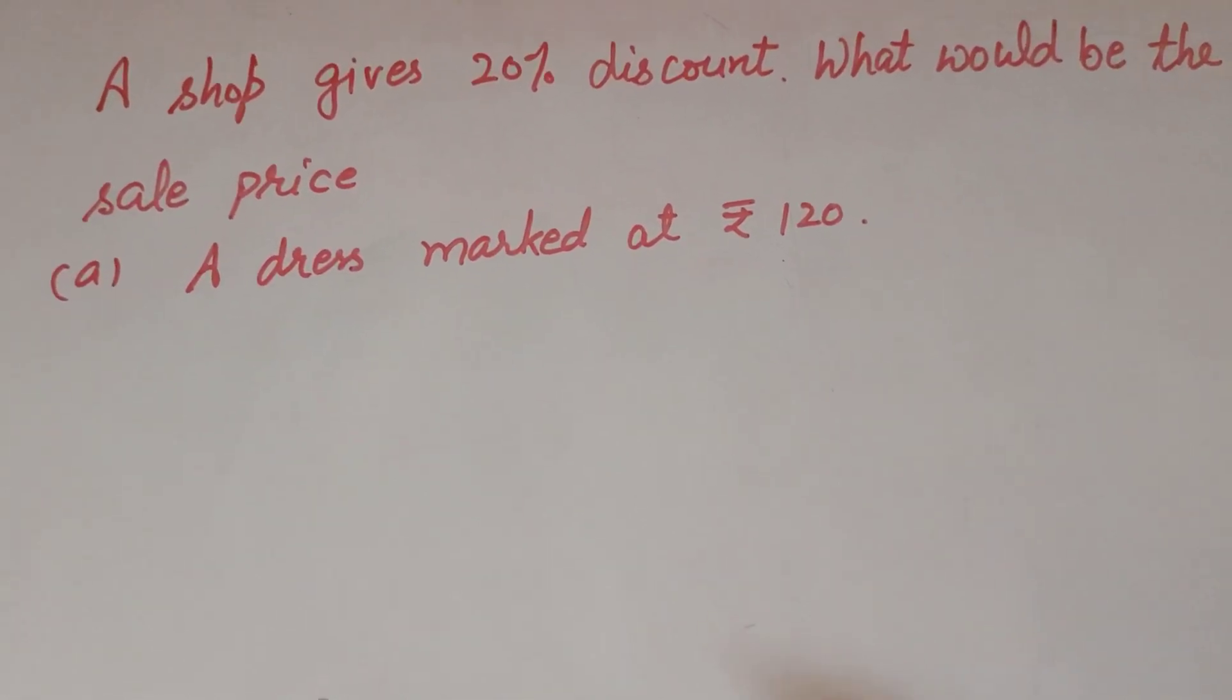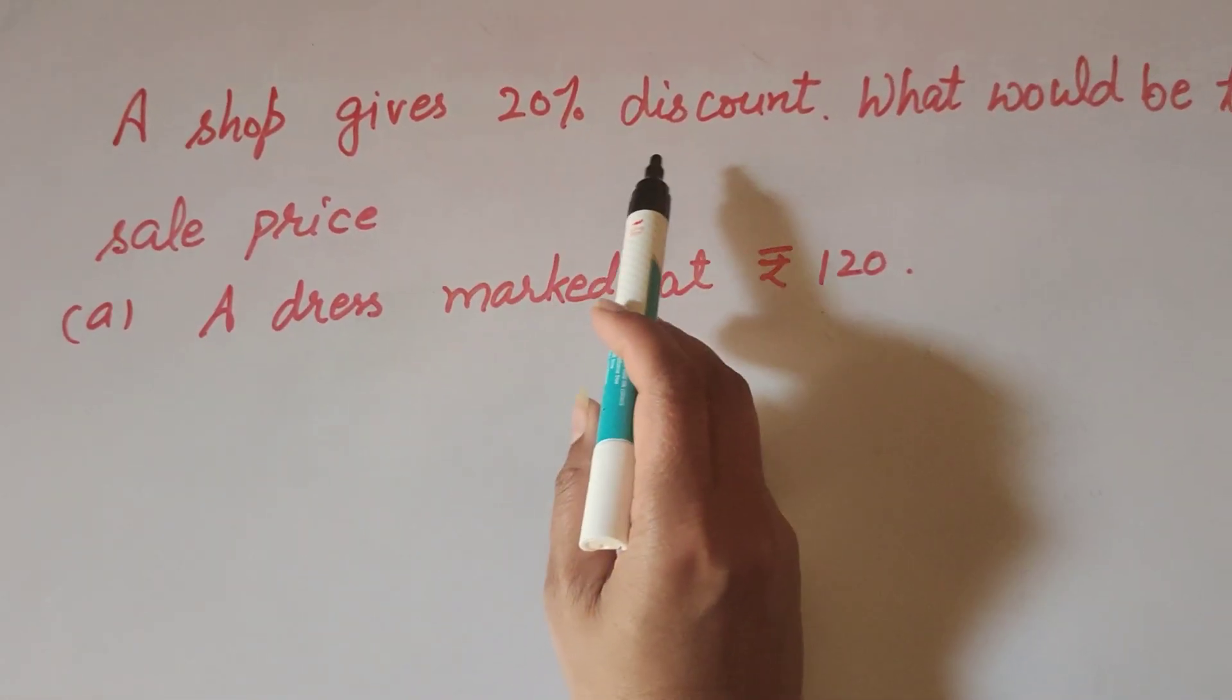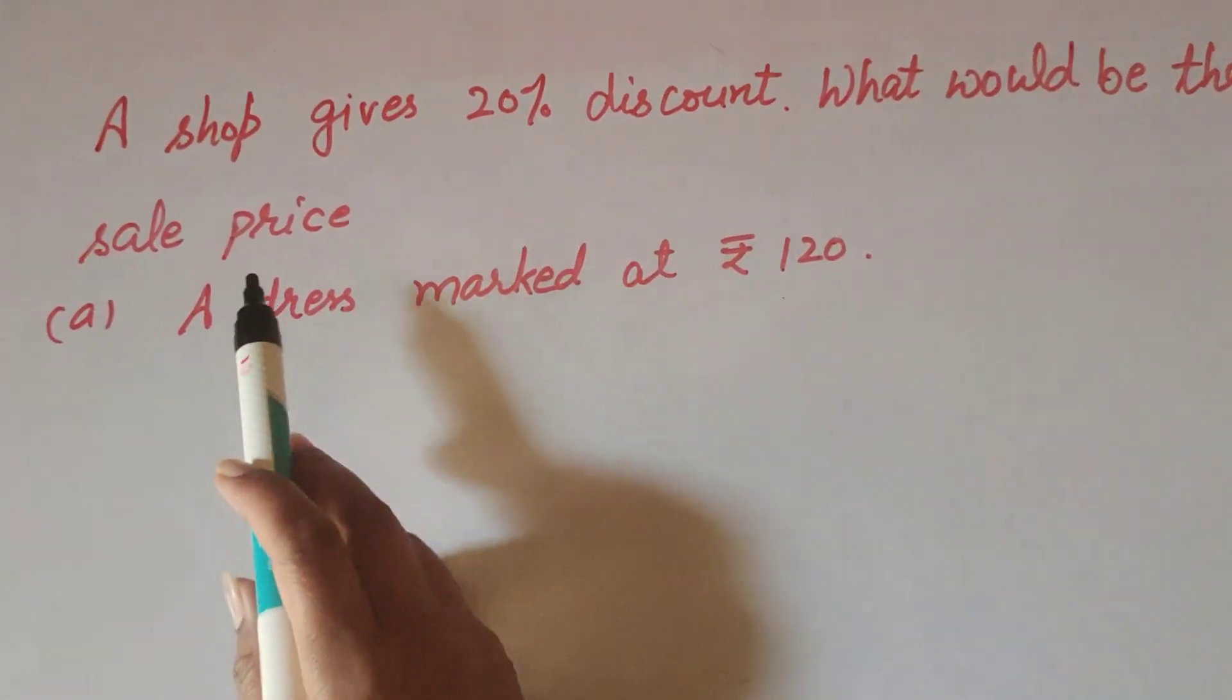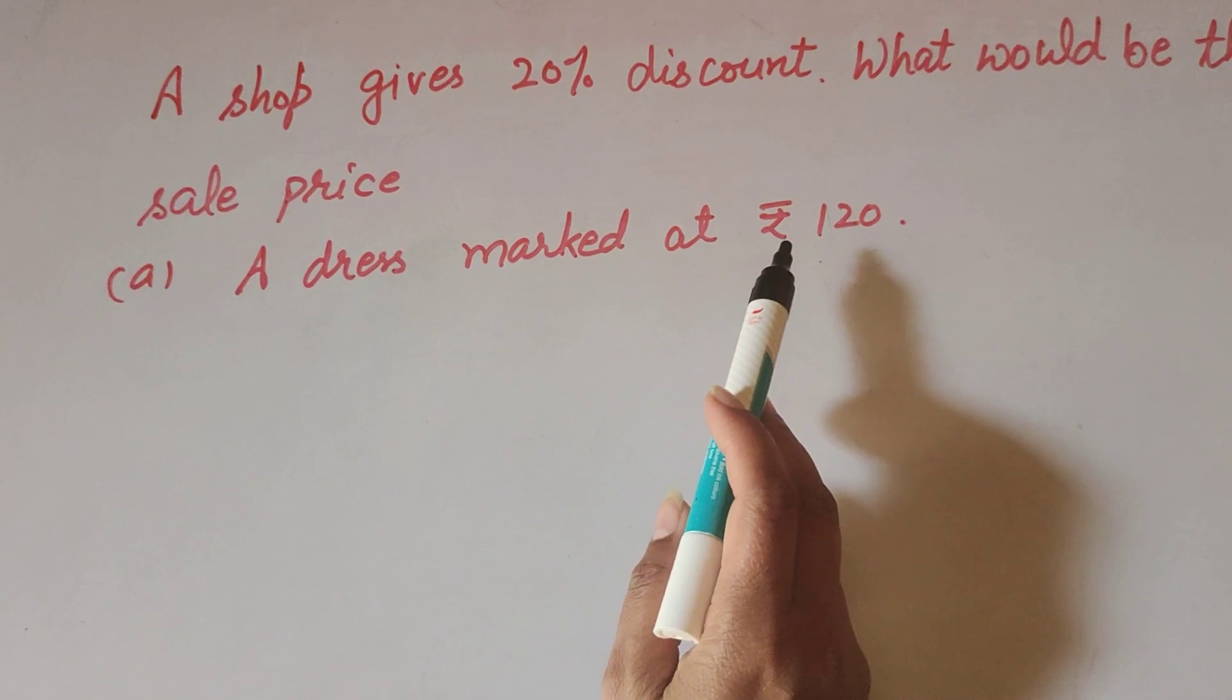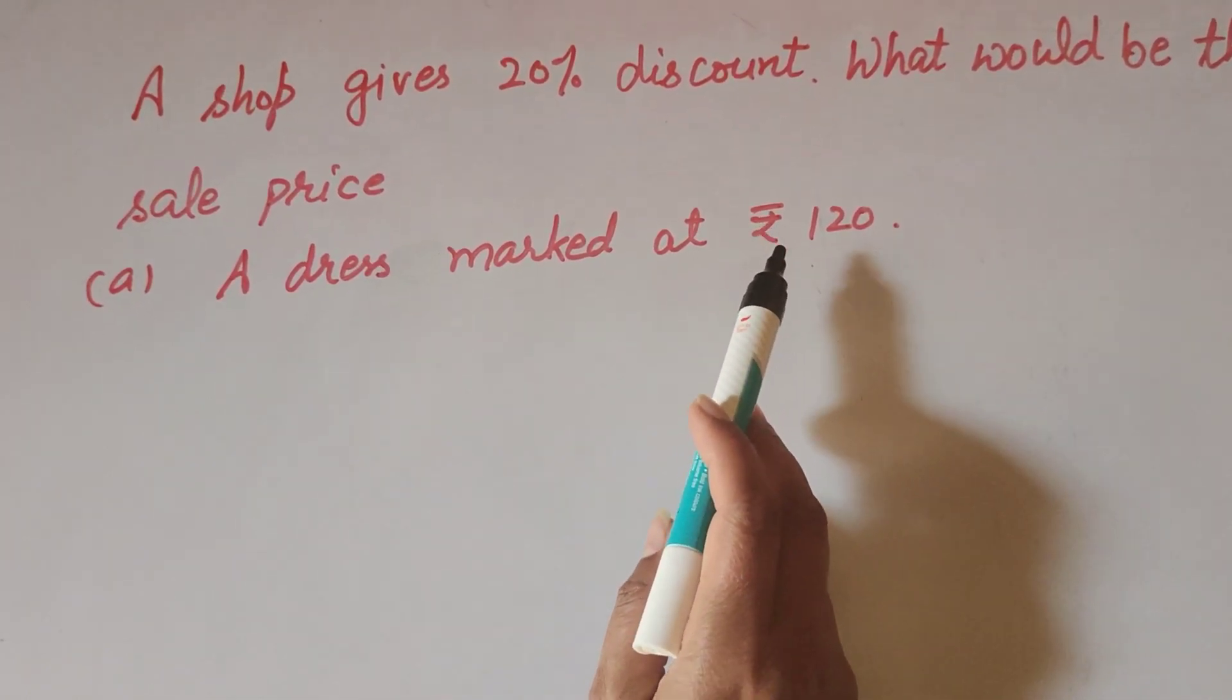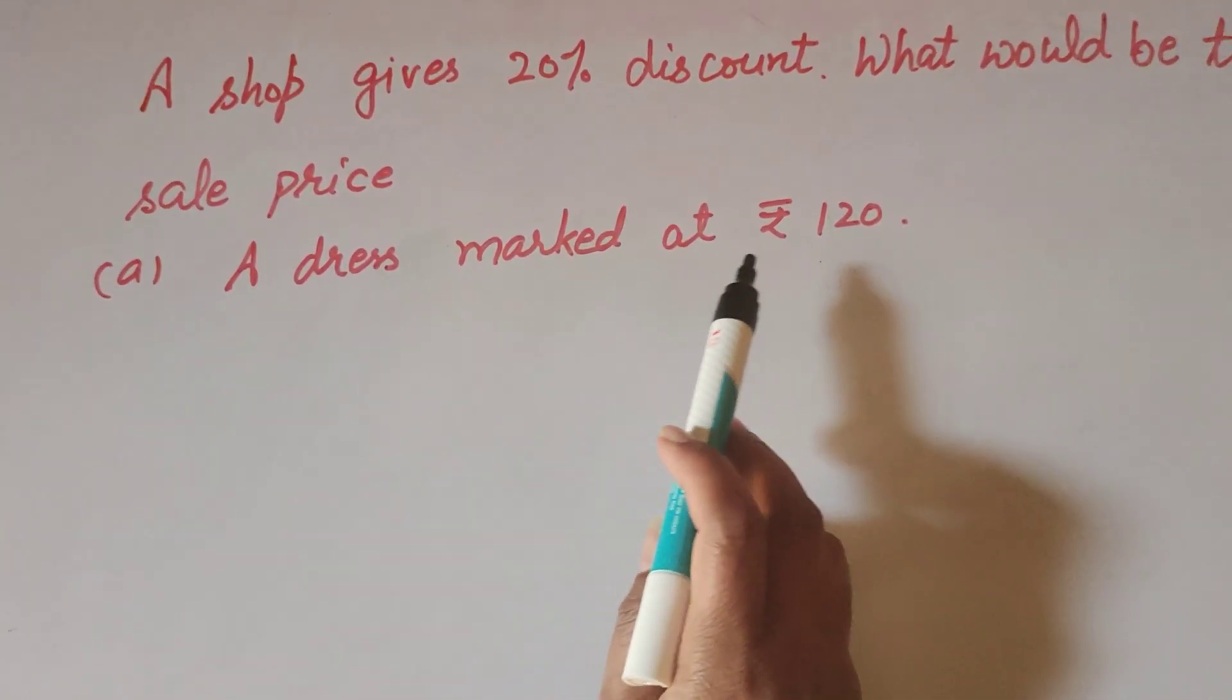Hello friends, welcome to my channel. In this video we discuss: a shop gives 20% discount, what would be the sale price? Part (a): A dress marked at Rs 120. So in this question, the given thing is marked price.